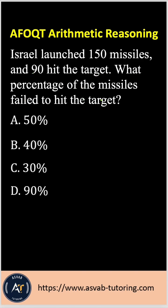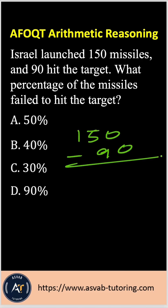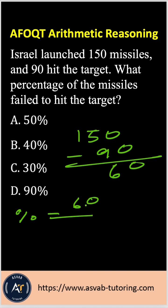First, you have to find how many failed. The number of fails is 150 minus 90, so 15 minus 9 gives you 60. Now if you want to find the percent of fails, that is equal to 60 over 150.